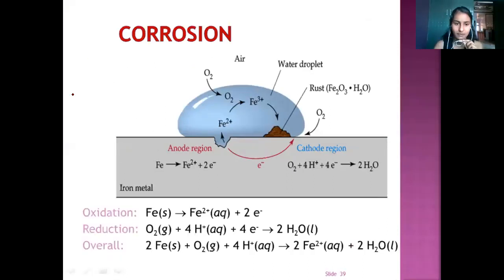As you can see in this diagram, the iron metal is exposed to moisture and it forms Fe to Fe2 plus plus 2 electrons. Reduction happens as O2 plus 4H plus ions plus 4 electrons which forms H2O. Overall reaction: 2Fe plus O2 plus 4H plus ions gives 2Fe2 plus plus H2O.